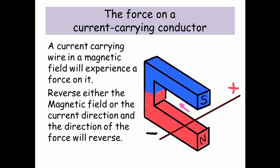A current carrying wire in a magnetic field will experience a force on it. Reverse either the magnetic field or the current direction and the direction of the force will reverse.